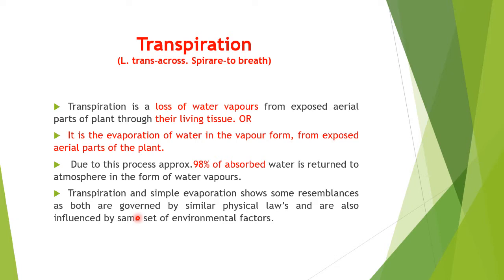As long as the plant is growing on the soil or in water, it has a root system and an aerial shoot system. It is connected with the soil through its roots, and there is radial as well as aerial conduction of water. That vaporization through aerial parts is called transpiration — the loss of water vapors from exposed aerial parts of the plant through their living tissue, or evaporation of water in vapor form from exposed aerial parts of the plant.